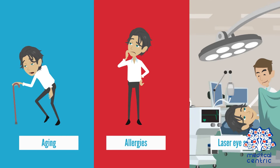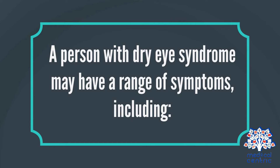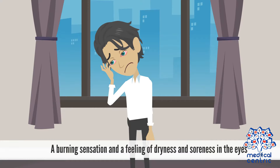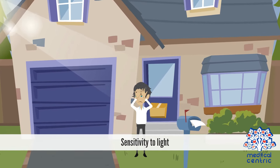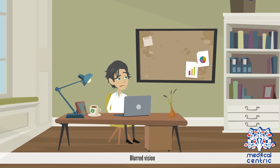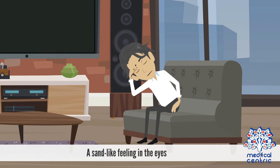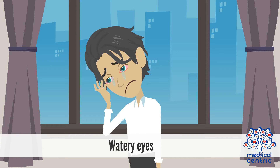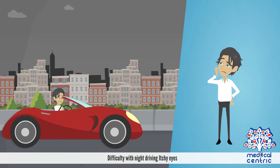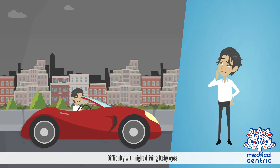Symptoms: A person with dry eye syndrome may have a range of symptoms, including redness of the eyes, a burning sensation and a feeling of dryness and soreness in the eyes, discomfort and difficulty when wearing contact lenses, sensitivity to light, blurred vision, a sand-like feeling in the eyes, eye fatigue after reading, watery eyes, difficulty with night driving, and itchy eyes.